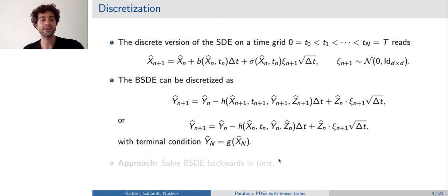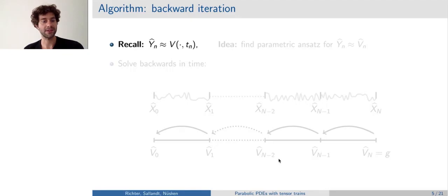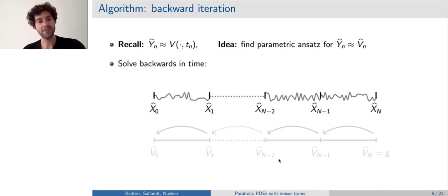Importantly, in both ways, we have the terminal condition to be g of x_n. And so, this actually motivates, since the terminal condition is known, to solve this BSDE also backwards in time. So, let us illustrate this in a schematic version on this slide. Recall that our backward process y_n is supposed to be equal to the PDE solution v at time t_n. So, the idea is to find a parametric ansatz for these y_n's, which we denote with v_n hat. And then, as mentioned before, we want to solve backwards in time. But first, we simulate our data points, the x forward process, from zero to capital N. So, these are n plus one data vectors which are available.